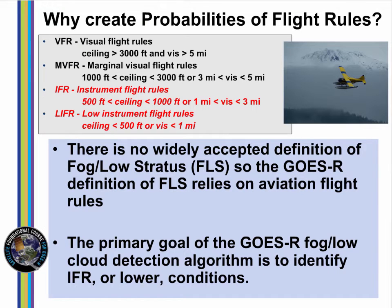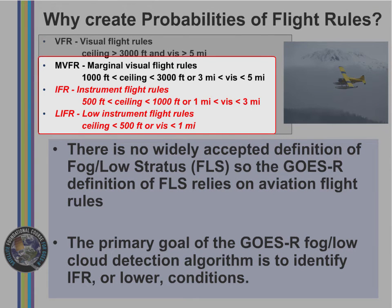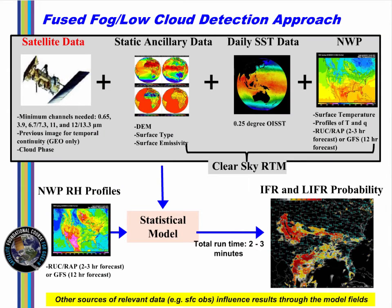Thus, there's a need for a product to identify regions of reduced ceilings and visibilities, and it was developed using flight rules definitions. Products generated include probabilities of marginal VFR conditions, IFR or low IFR conditions. There's also a cloud thickness product.